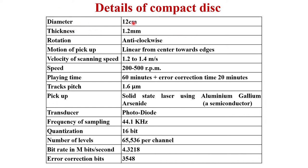Specifications of the compact disc: diameter is 12 centimeters, thickness is 1.2 millimeters, rotation is anti-clockwise, motion of pickup is linear from center towards the edges. The scanning speed is 1.2 to 1.4 meters per second. Speed is 200 to 500 rotations per minute — inner speed is 500 RPM and outer is 200 RPM. Playing time is 60 minutes plus error correction time of 20 minutes.